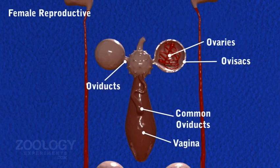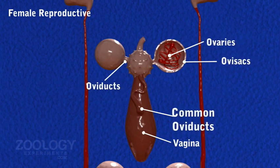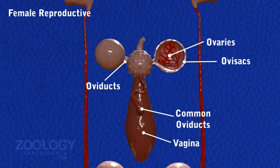Female Reproductive Organs: Female reproductive organs are compact and include ovisacs, ovaries, oviducts, common oviducts, and vagina.